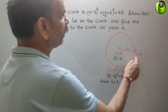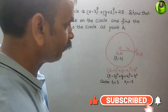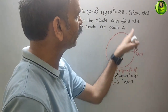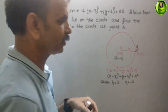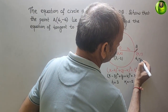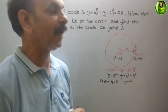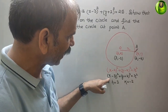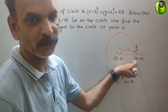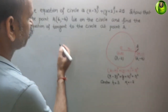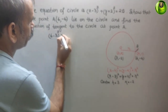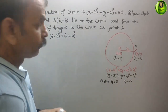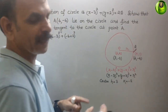Here, instead of P, they have taken point A. So we replace P with A, and x, y are given as (6, -6). Now we have to prove that it lies on the circle. We substitute: (6-3)² + (-6+2)² and check if it equals R² = 25.